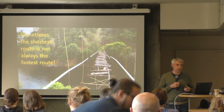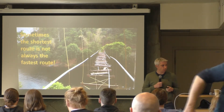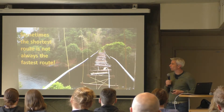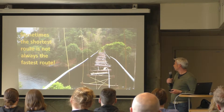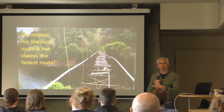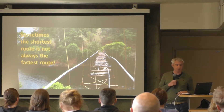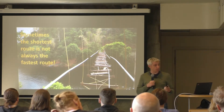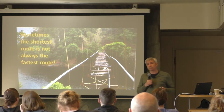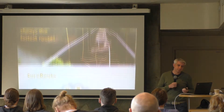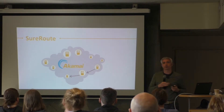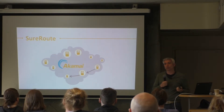Sometimes the shortest route is not always the fastest route. If we take this example of an unstable bridge - it looks unsafe and would probably take a long time to get across - it might be quicker to walk around and find another bridge. What has this got to do with CDNs? We can do something similar when routing dynamic traffic across the internet.